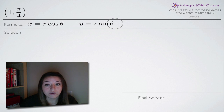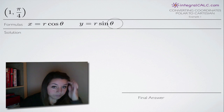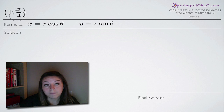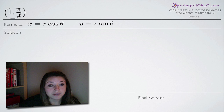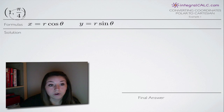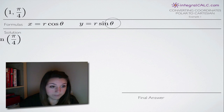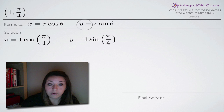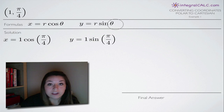Whenever you're converting coordinates from polar to Cartesian, what you need to remember is that the polar coordinates 1, pi over 4 are representing r, theta. So we're going to be plugging in 1 for r and pi over 4 for theta into our two formulas, x equals r cosine of theta and y equals r sine of theta.